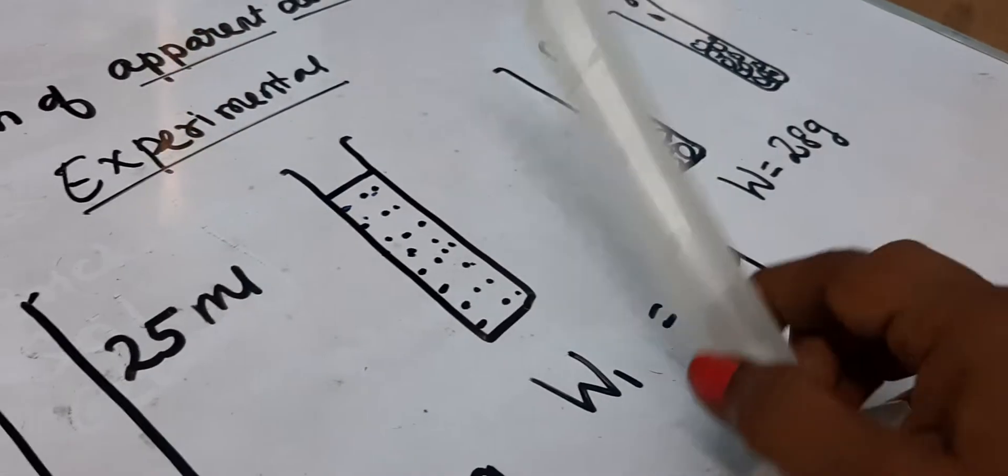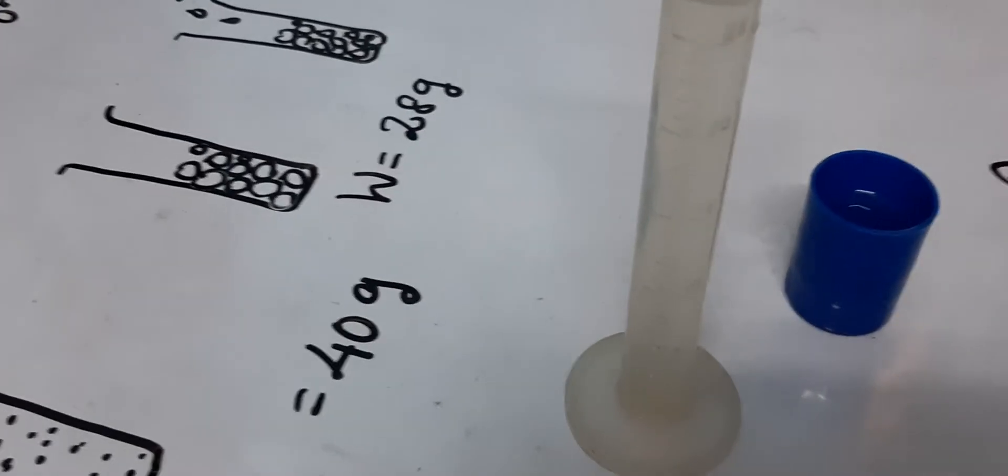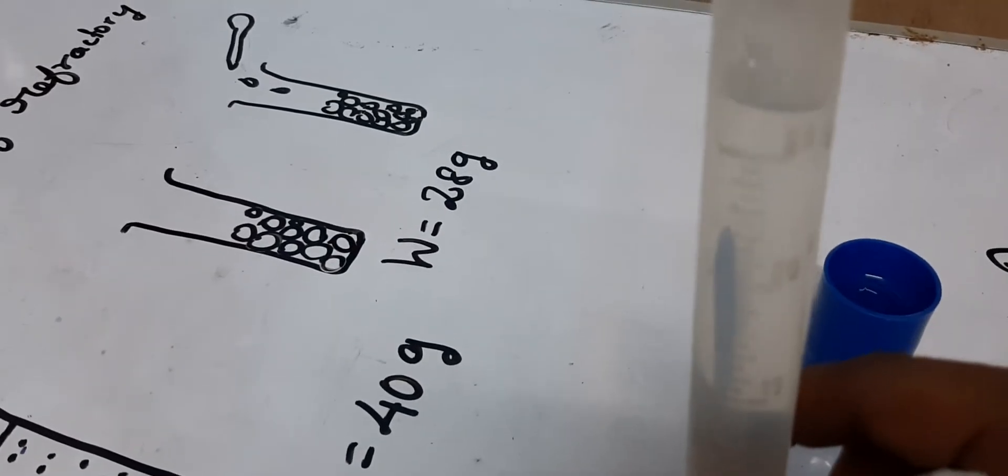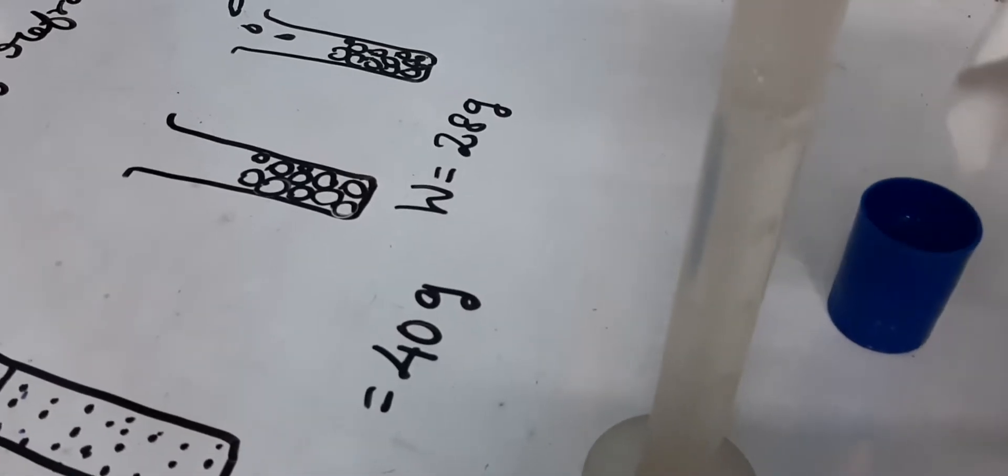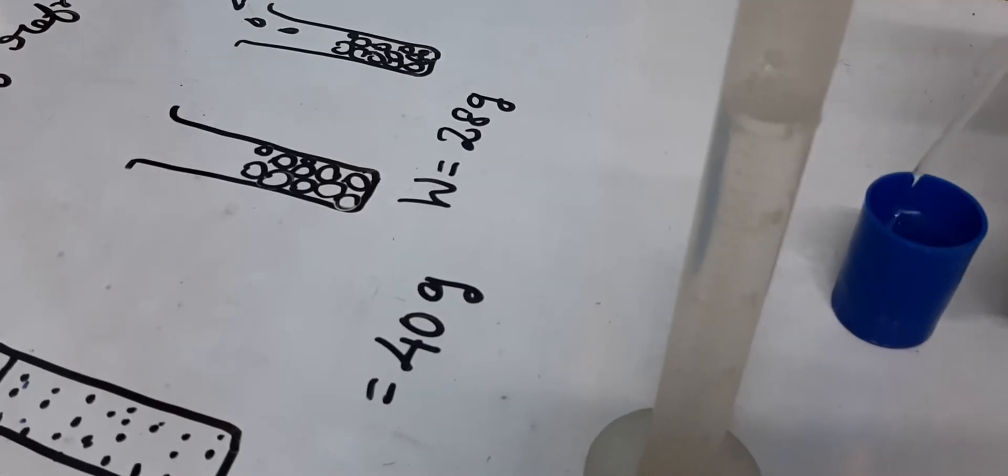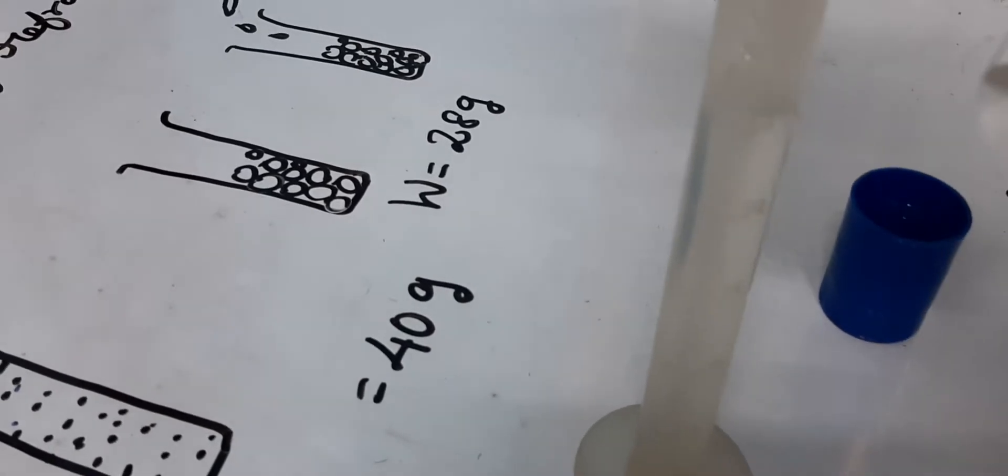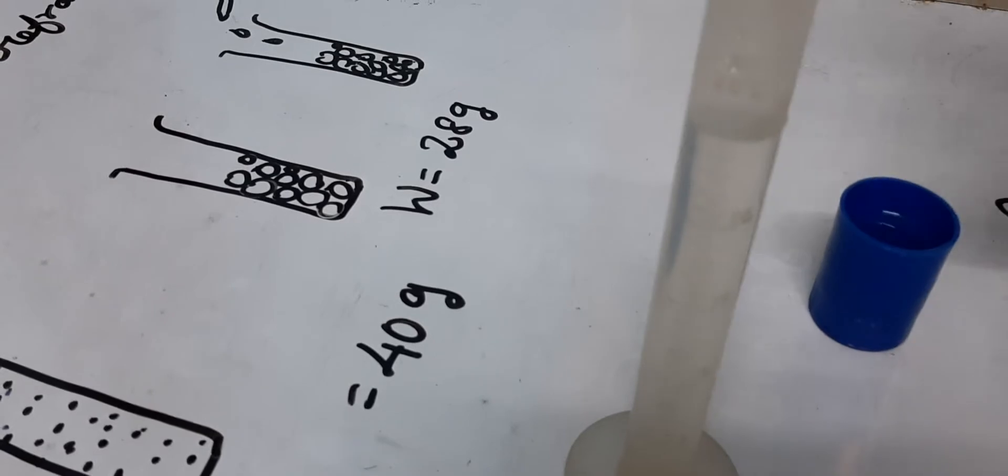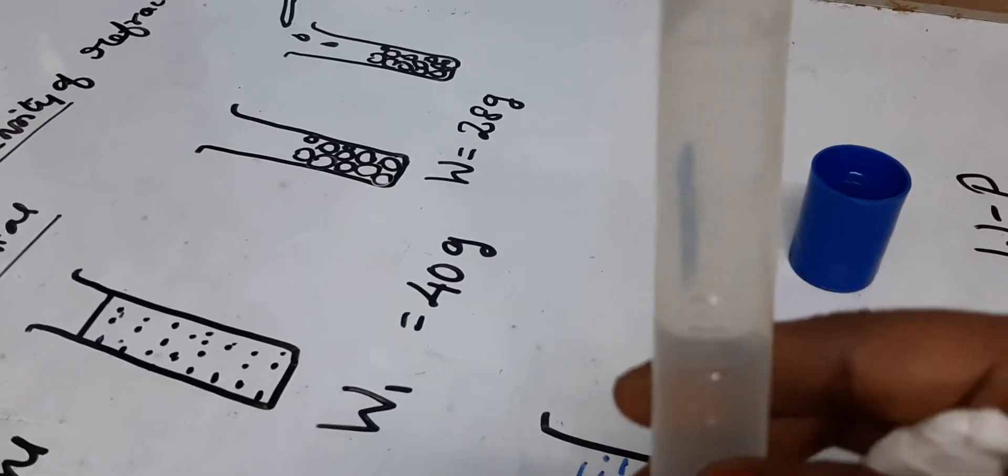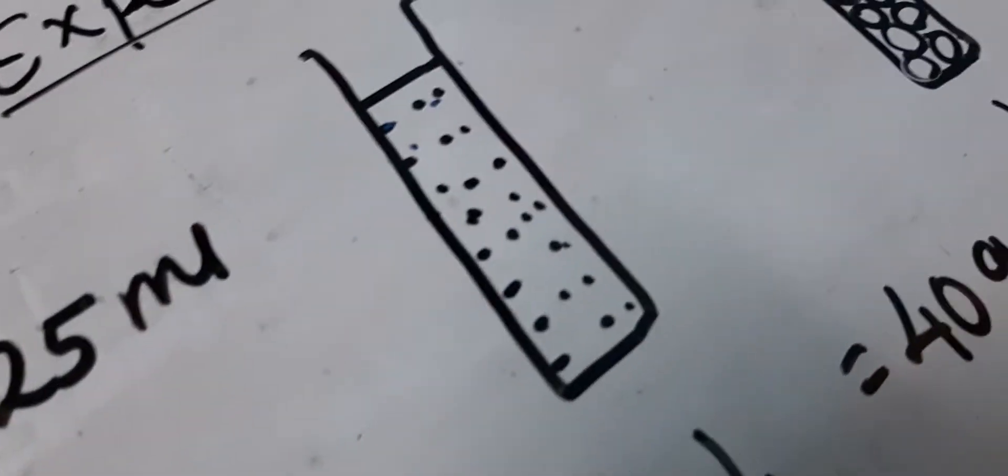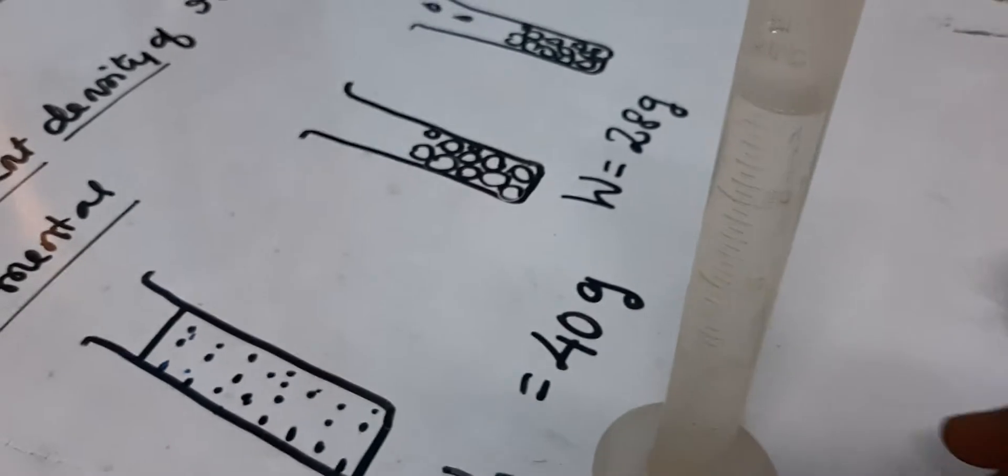Next step is we have to fill this with distilled water and then take the weight of the measuring cylinder filled with water. It's just excess of the 25 ml, I'm removing using a dropper. So 25 ml of distilled water is taken. Now we have to take the weight of the cylinder with the water. That is W1 equals 40 grams.